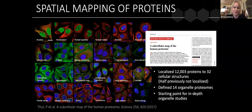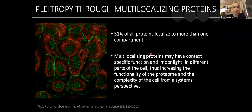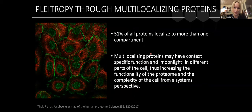With this information, we could define organelle proteomes — very useful cell biology data for studying proteins and organelle biology. One very interesting observation is that half of all human proteins localize to more than one compartment. These multilocalizing proteins may have context-specific functions and moonlight in different parts of the cell, increasing the functionality of the proteome and the complexity of the cell from a systems perspective. This is a key argument for why we must describe cells with spatial information.